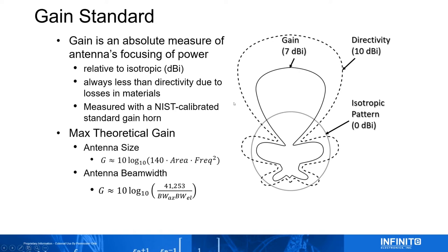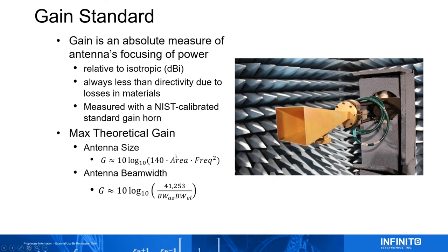A lot of vendors report directivity or call it 'directive gain' to work around this. When you get in the field, you'll see it's actually a few dB less than the data sheet — which is disappointing when you did your propagation studies. Gain needs to be measured with a calibrated horn. Questions you can ask a vendor: how do they define gain? How do they measure it? Bigger antenna means higher gain; higher frequency for a fixed antenna size also means higher gain; narrower beam width means higher gain.